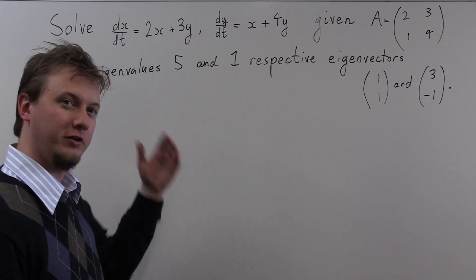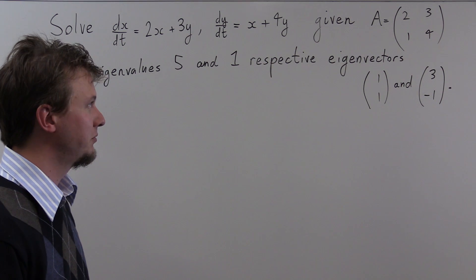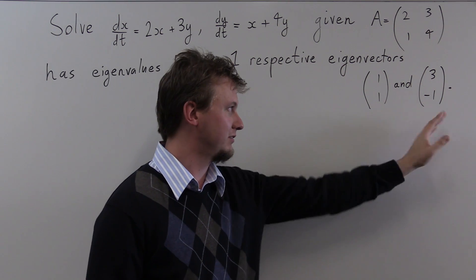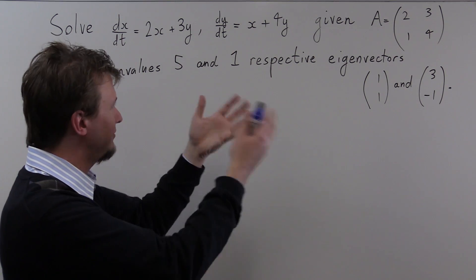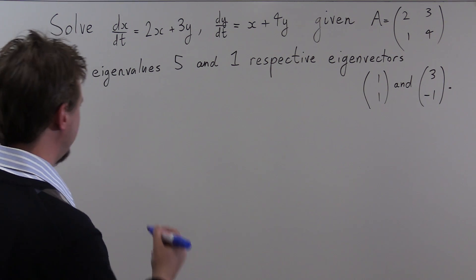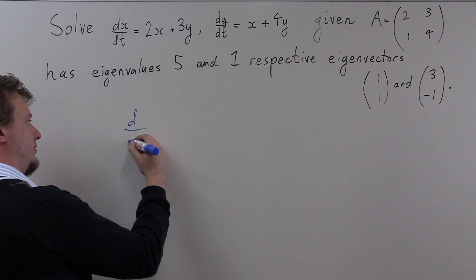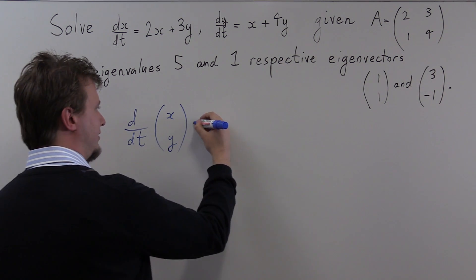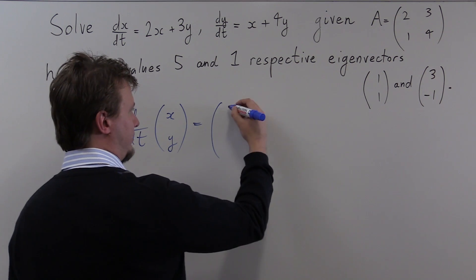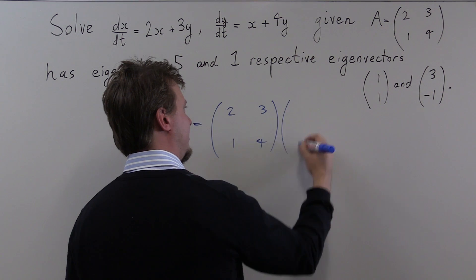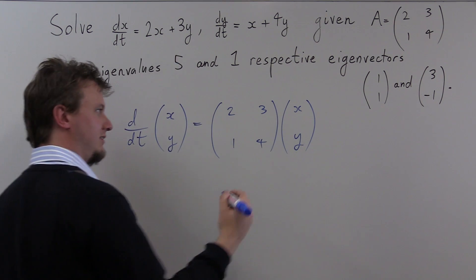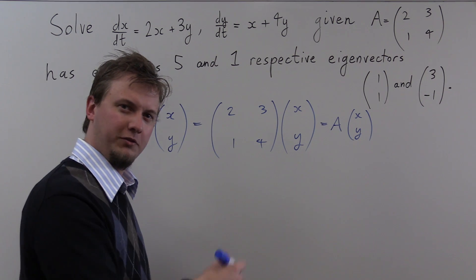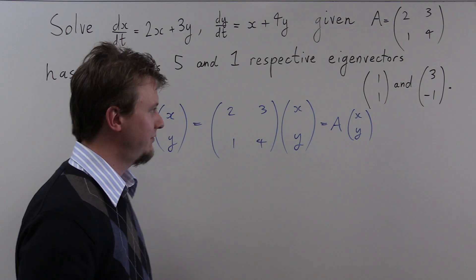For the second part of the question we solve a calculus problem, and we're not unarmed — matrix A has eigenvalues 5 and 1 with the eigenvectors we just found. Looking at the system of differential equations, it can be written as the derivative of the vector (x, y) equals the matrix 2, 3, 1, 4 times (x, y) — that is, it equals A times (x, y). Problems of this form are easy to solve once we know the eigenvectors and eigenvalues.